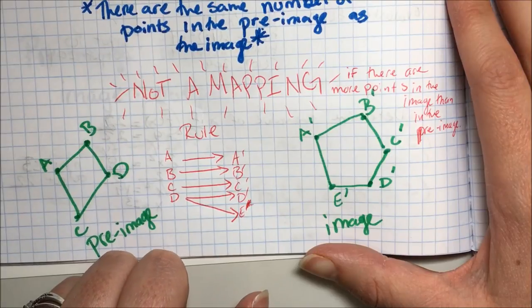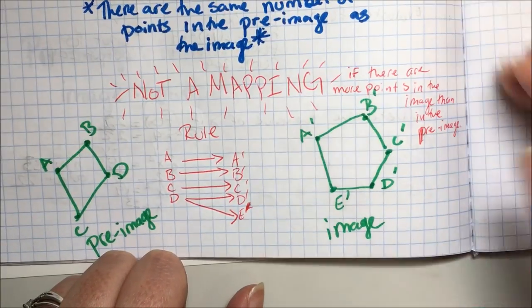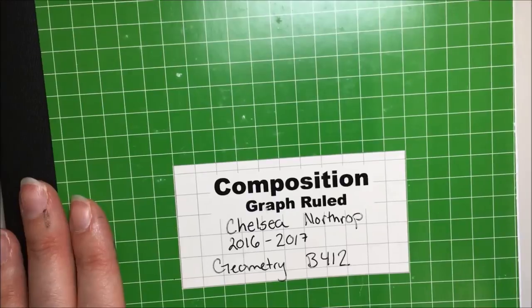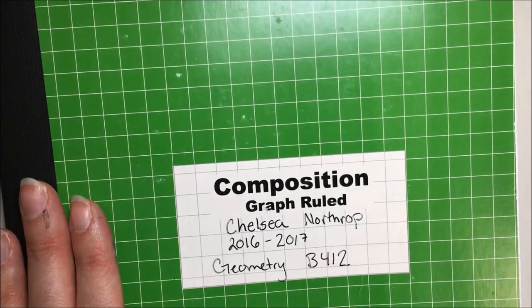A basic recap: a function takes one domain value to one and only one range value — we can also call that a mapping when using coordinate points. A one-to-one function has one range value for every domain value and one domain value for every range value. This one-to-one function using coordinate points is called a transformation. Not a mapping or not a function happens when there are more points in the image than in the pre-image. Thanks for watching tonight's notes!